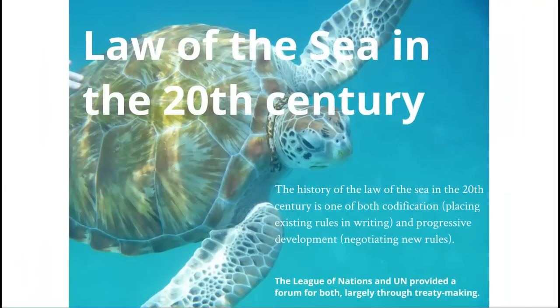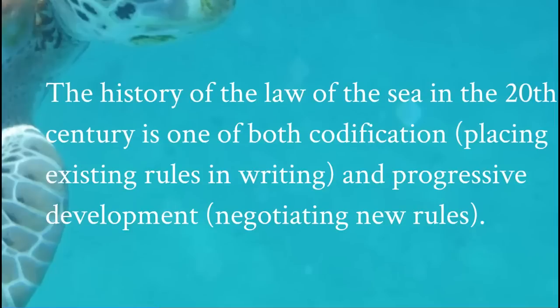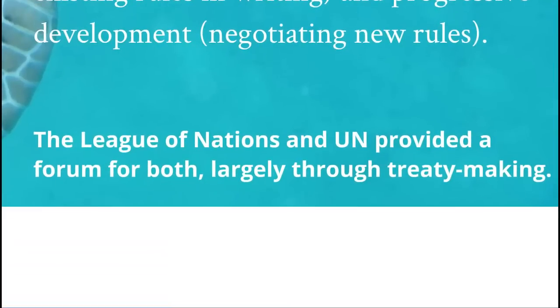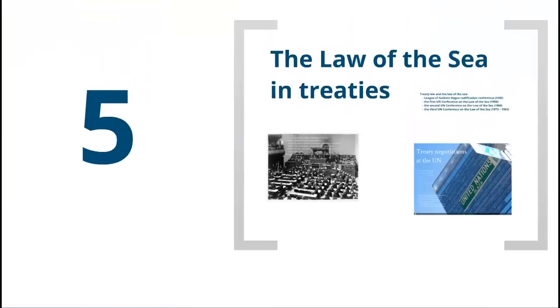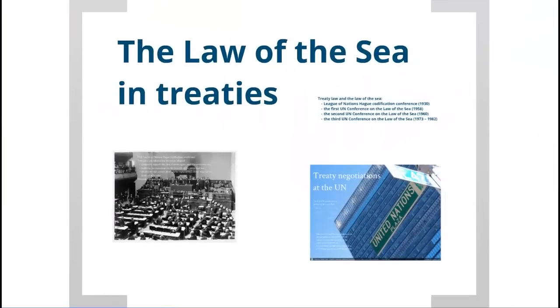The law of the sea in the 20th century has developed principally through a process of codification and progressive development. Codification means we put rules that everyone already agrees to in writing, and progressive development is essentially the suggestion or negotiation of new rules. Both the League of Nations and the United Nations system have provided a forum for this codification and progressive development of rules on the law of the sea, largely through treaty making — sometimes reducing to writing rules everyone already agrees upon, and sometimes creating new rules.